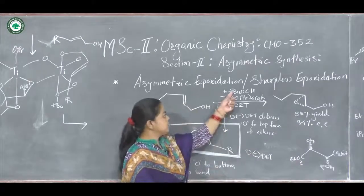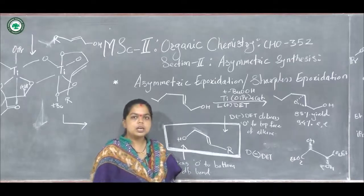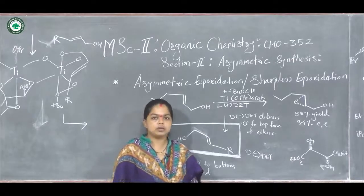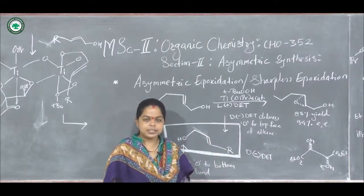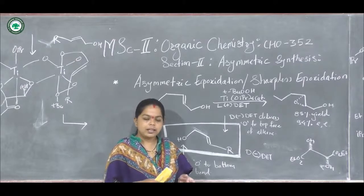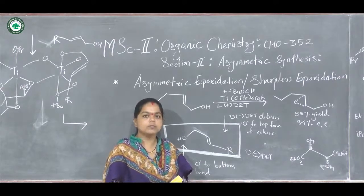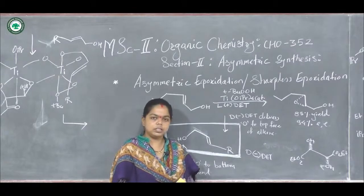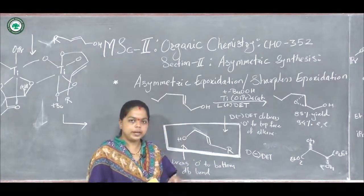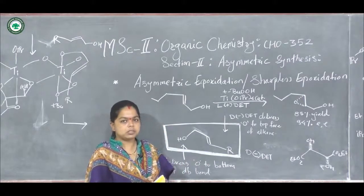The third reagent is tertiary butoxy hydroperoxide, which acts as the oxidizing agent. It oxidizes the allylic double bond, delivering oxygen to the double bond so that the corresponding epoxide is formed.